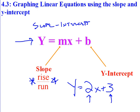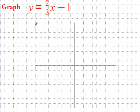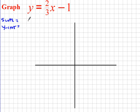So here's an example. My goal is to graph y equals two-thirds x minus 1. First I need to figure out what my slope is, and then I need to figure out what my y-intercept is — we always want to identify those two things first. Knowing that it's y equals mx plus b, my slope is the coefficient of x, so my slope is two-thirds. My y-intercept is the constant, which is negative 1.